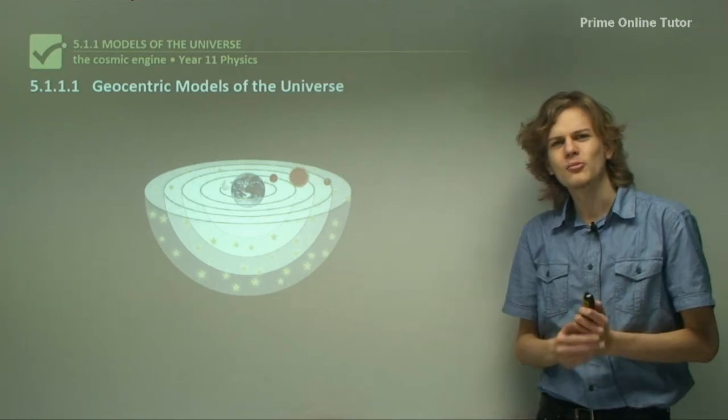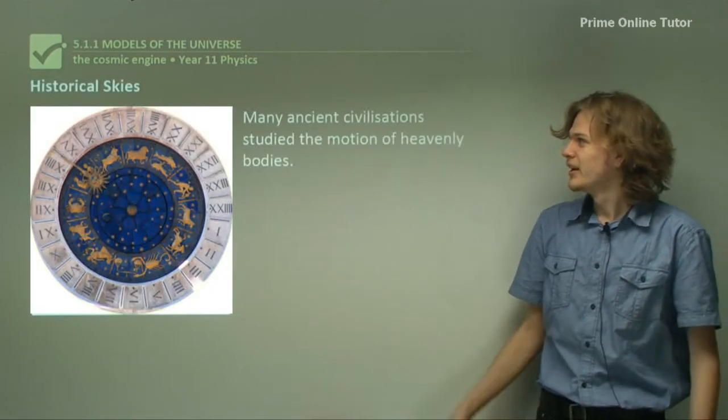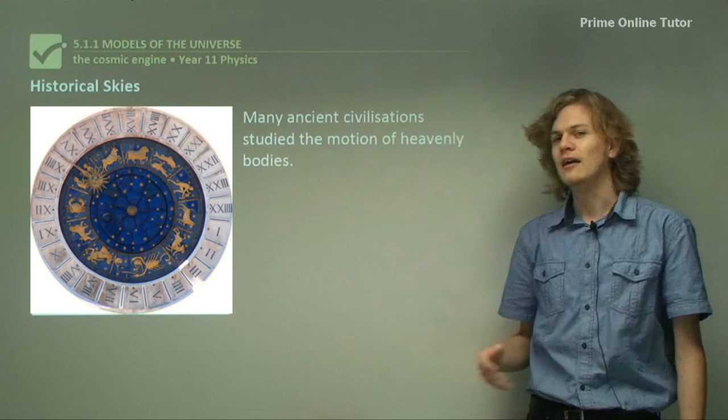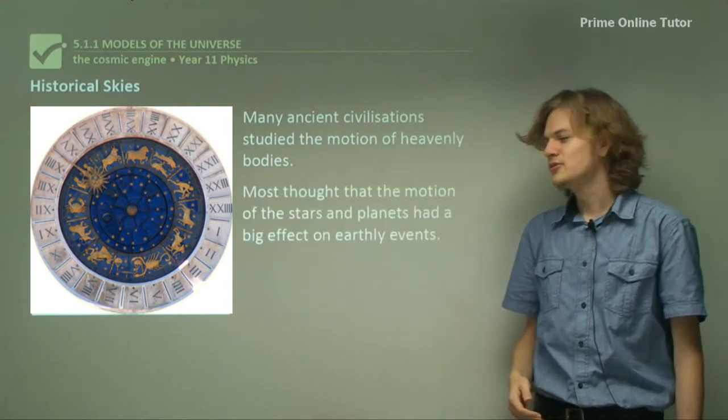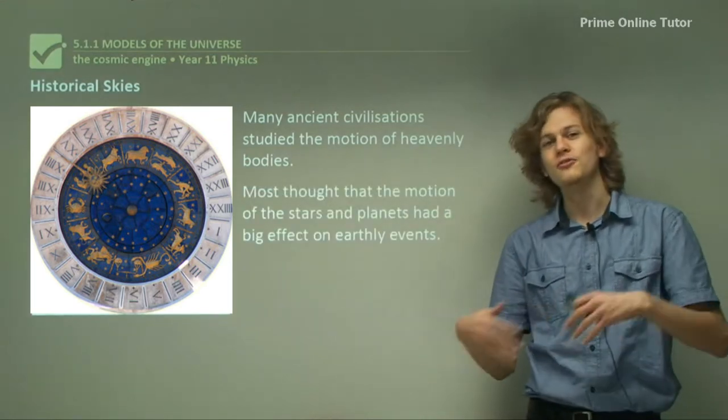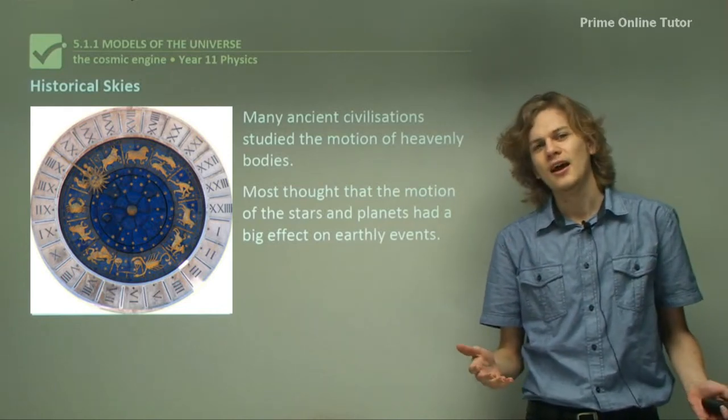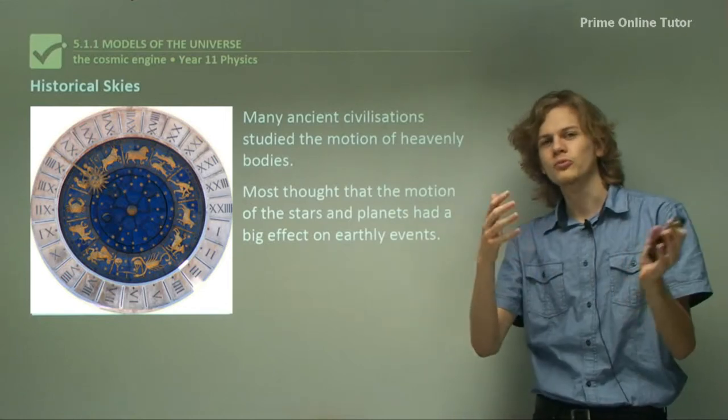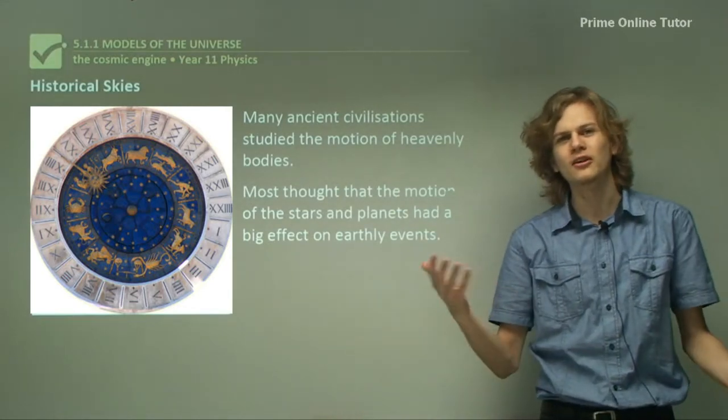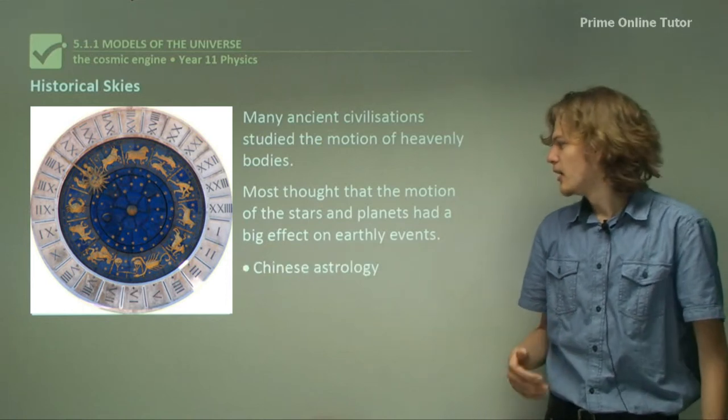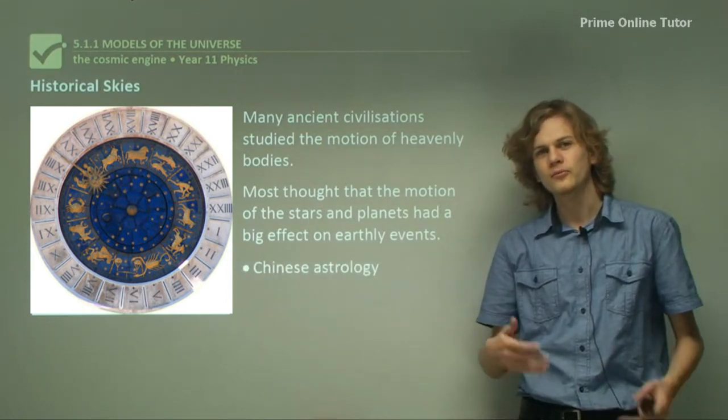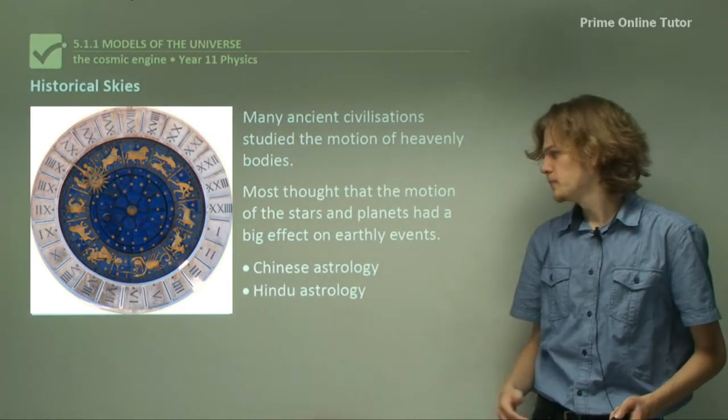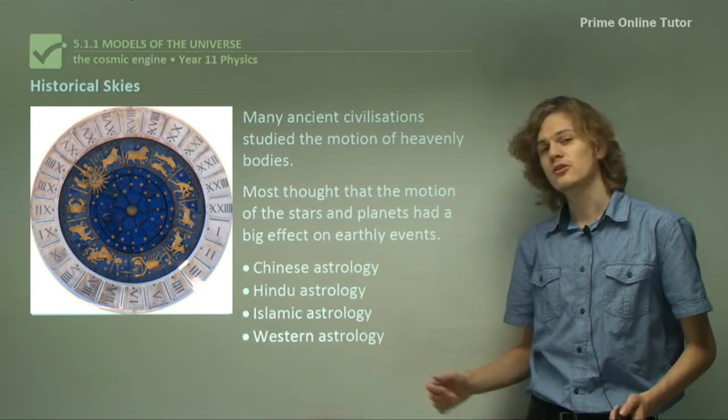Many ancient civilizations from all different continents of the world have studied the motion of the heavenly bodies. The reason for this was because they thought that the motion of the stars and planets affected earthly affairs. Some examples of cultures who used this for astrology were Chinese astrology, Hindu astrology, Islamic astrology and Western astrology.